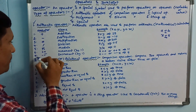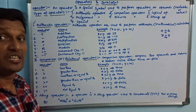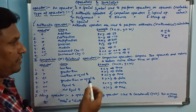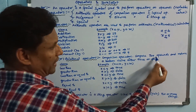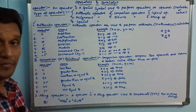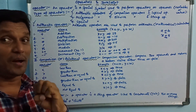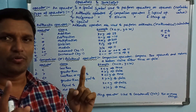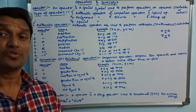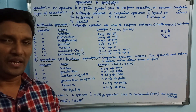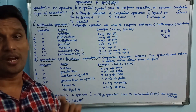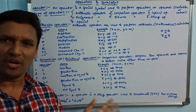Next, comparison operators — also called relational operators. Comparison operators compare two operands and return a boolean value, either true or false. For example, given two variables, we can find which is larger. When comparing two operands, we use relational operators.